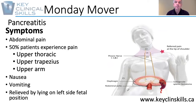The symptoms of pancreatitis include abdominal pain, but along with that, at least 50% of the patients with this problem also experience upper thoracic, upper trapezius, and even upper arm pain.